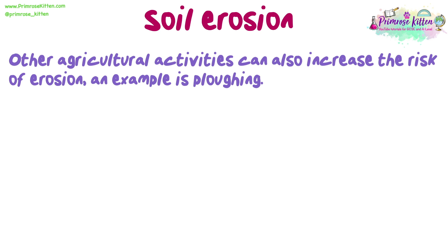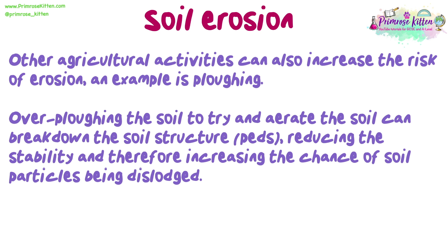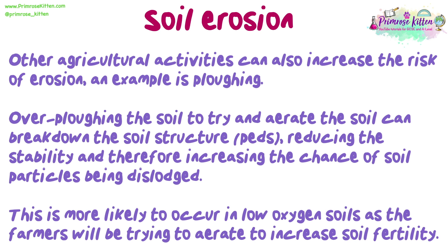Other agricultural activities can also increase the risk of erosion. An example is ploughing: overploughing the soil to try and aerate it can break down the soil structure, or the peds, reducing stability and therefore increasing the chance of soil particles being dislodged. This is more likely to occur in low-oxygen soils, as farmers will be trying to aerate them to increase soil fertility.